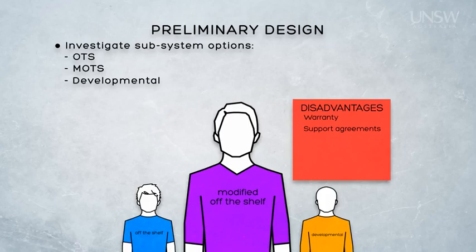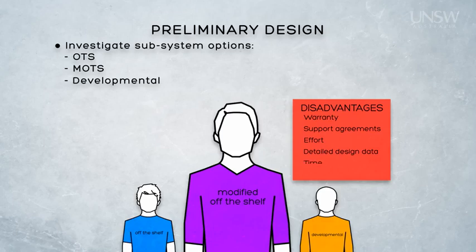One other point to note about modifying off the shelf items: in my experience, people tend to drastically underestimate the effort associated with modifying off the shelf items. They also tend to assume that critical enablers, like detailed design data for the item, will be available. You must be careful not to underestimate how much time, money, and effort will be involved, and you must ensure that critical enablers like detailed design data are available prior to making decisions about modifying off the shelf items.